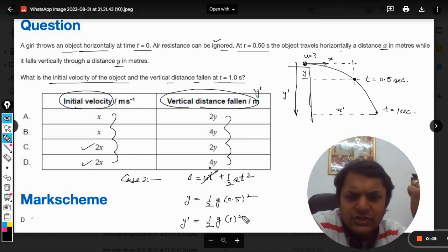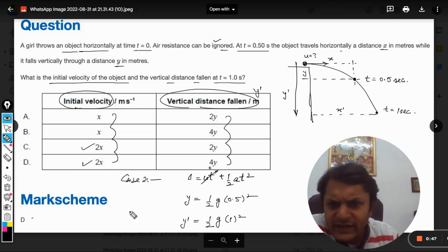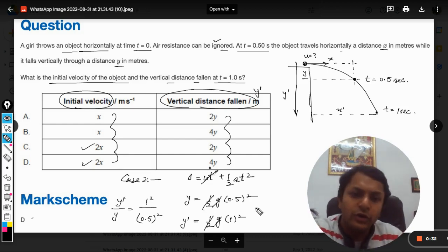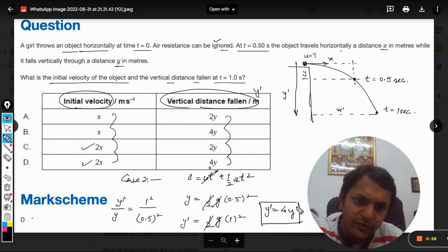So we need to compare these two. Very simple - y dash divided by y. We just divide these things, so half and g will cancel each other. So it will be one squared divided by 0.5 squared, which will become 4. So our answer will be y dash equals 4y.